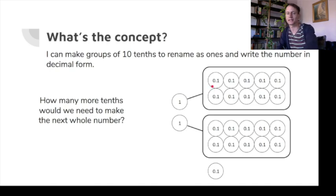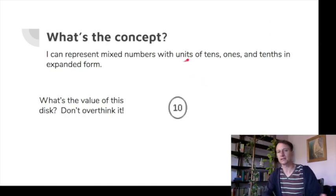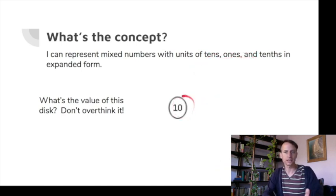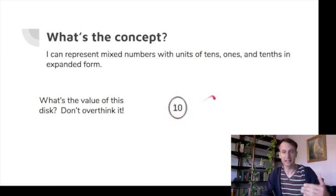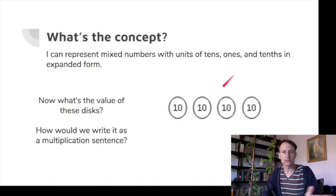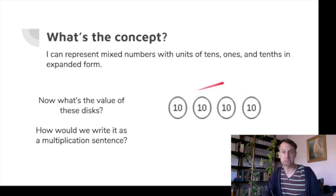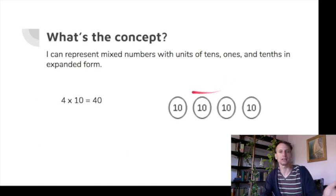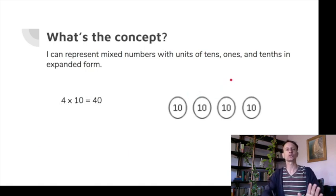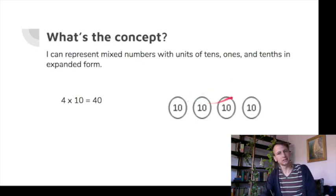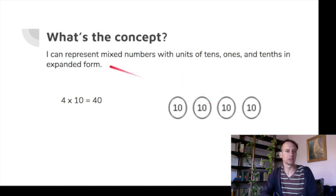Now: mixed numbers with tens, ones, and tenths in expanded form. What's the value of this disk? Ten. These four disks: 10, 20, 30, 40. As a multiplication sentence, that's four times ten equals forty. We just wrote 40 in expanded form as four times ten.